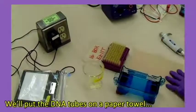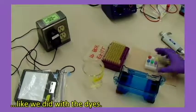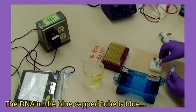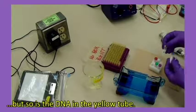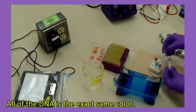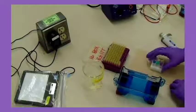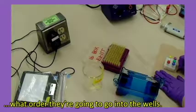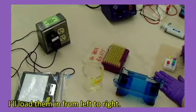We'll put the DNA tubes on a paper towel like we did with the dyes. The DNA in the blue capped tube is blue, but so is the DNA in the yellow tube. All of the DNA is the exact same color. The only way to tell them apart is to note what order they're going into the wells. I'll load them in from left to right.